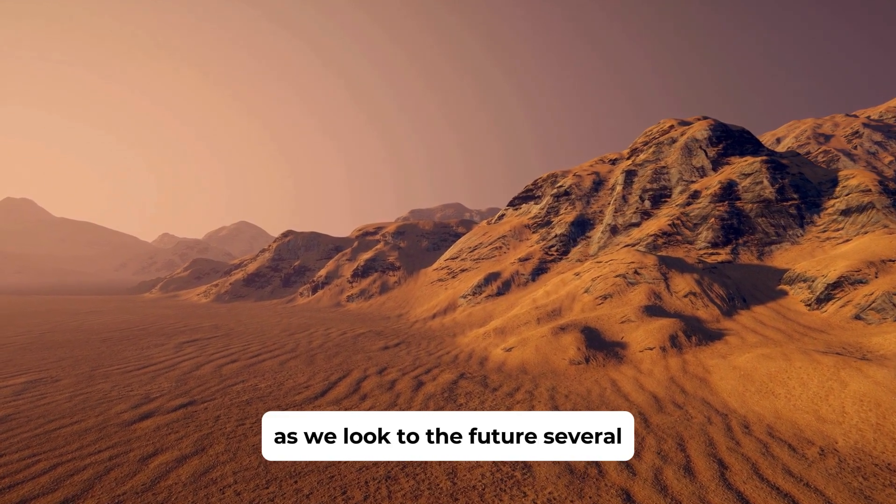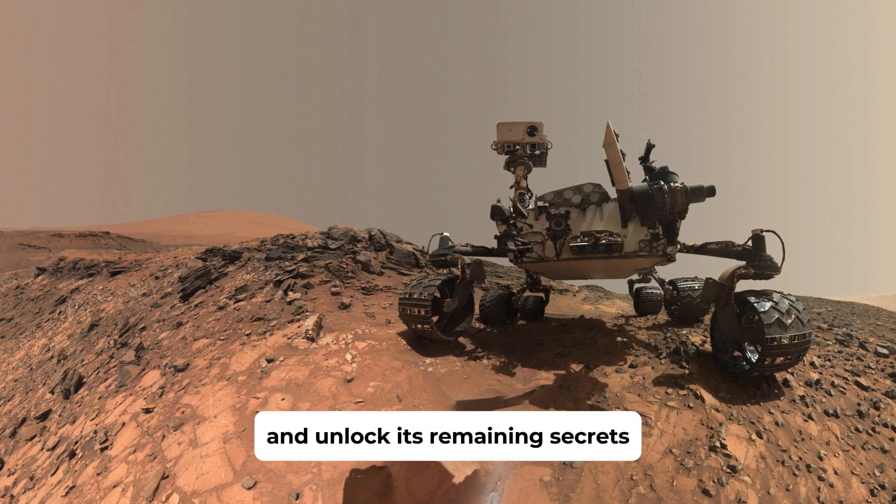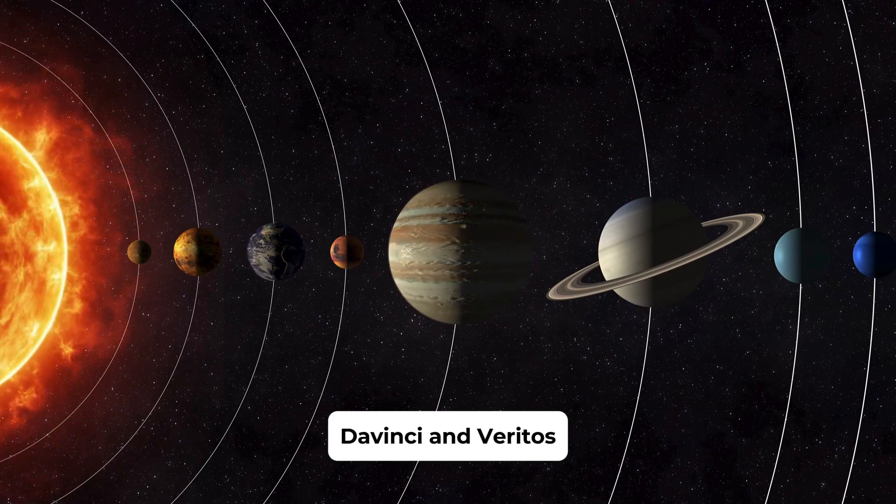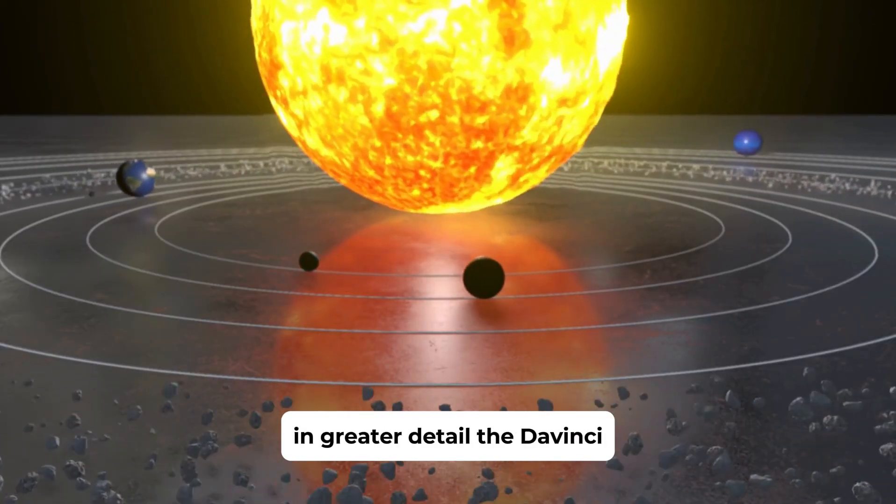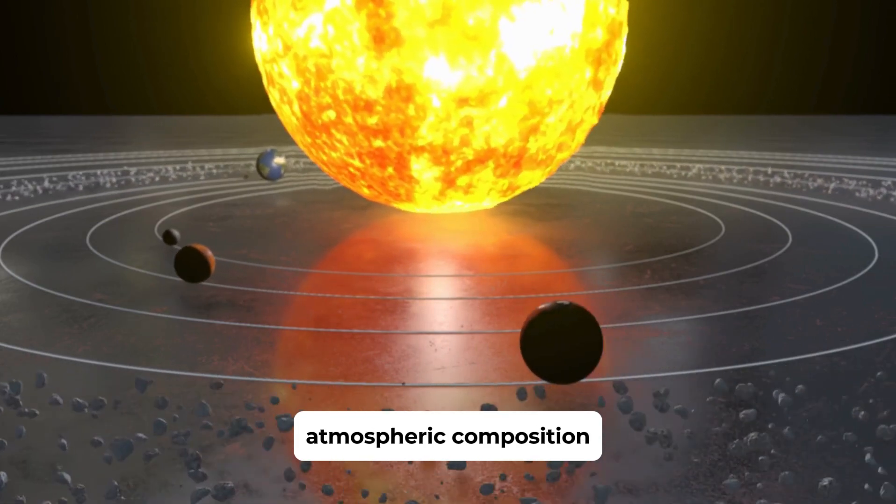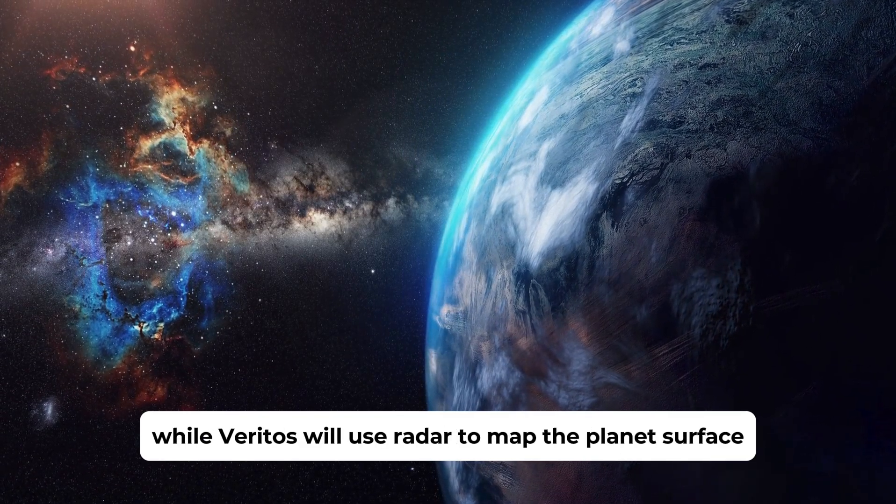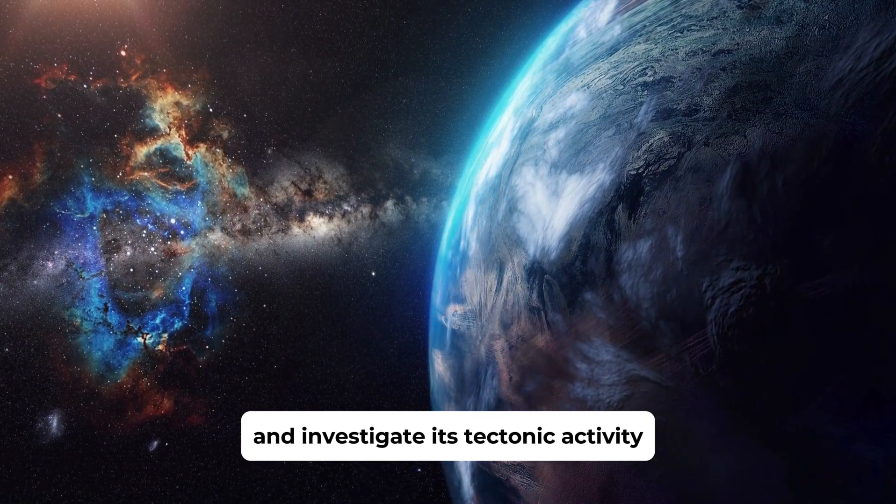As we look to the future, several exciting missions are planned to further explore Venus and unlock its remaining secrets. NASA is preparing to launch two new probes, da Vinci and Veritas, to investigate the planet's atmosphere and surface in greater detail. The da Vinci mission will focus on studying Venus's atmospheric composition and understanding its geological history, while Veritas will use radar to map the planet's surface and investigate its tectonic activity.